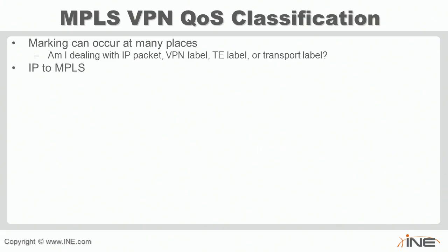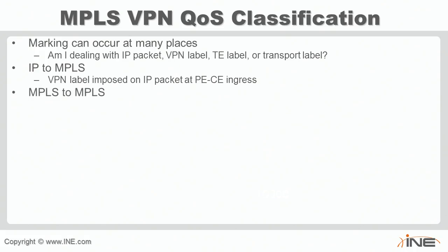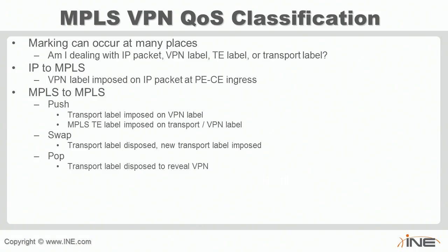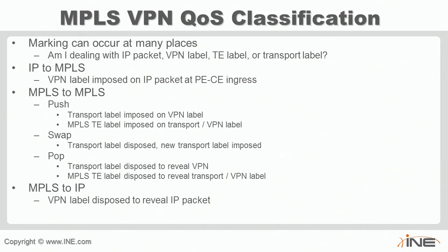The different operations are: IP to MPLS (imposition/push) happening on the ingress interface; MPLS to MPLS (swap), which involves swapping the transport label or adding TE labels in the core; and at egress, the disposition — popping the top label to reveal the VPN label, or removing a TE label to reveal the transport or VPN label. Finally, the MPLS to IP condition is the final disposition as traffic leaves the service provider network going out to the customer.